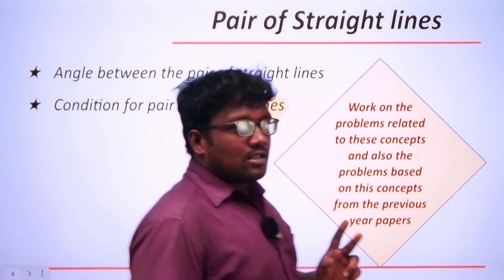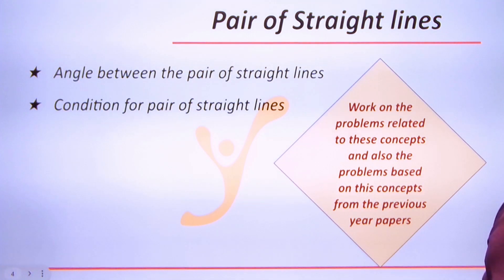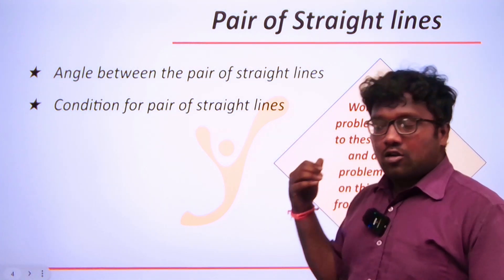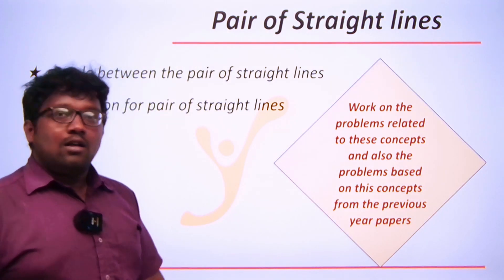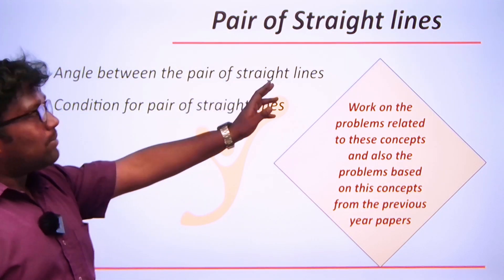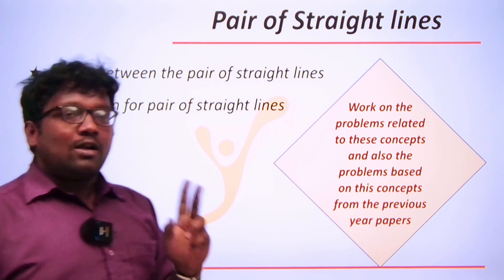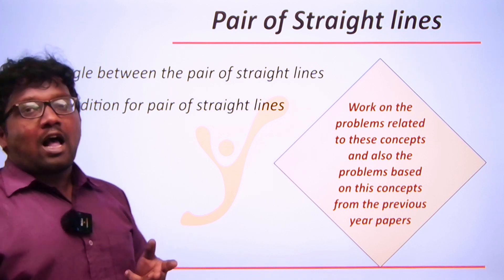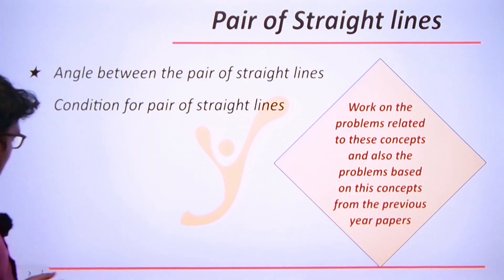The third topic is pair of straight lines. Focus on two areas: the angle between the pair of straight lines and the condition for a pair of straight lines. Work through these concepts and the questions asked in previous year examinations. You should spend around two days on each topic, with two hours per day, to complete every topic thoroughly.